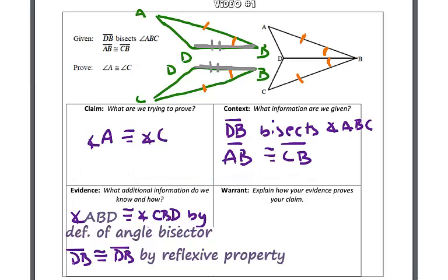With this information, we have enough to prove that these two triangles are congruent. The last piece of evidence is that triangle ABD is congruent to triangle CBD by the side-angle-side congruency shortcut.